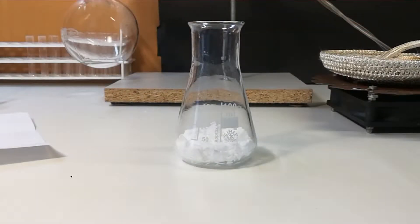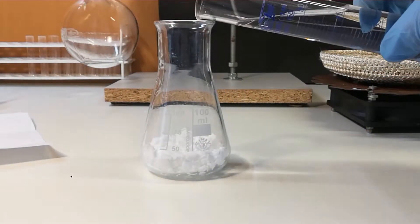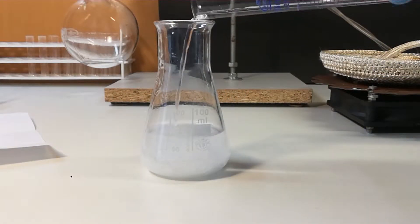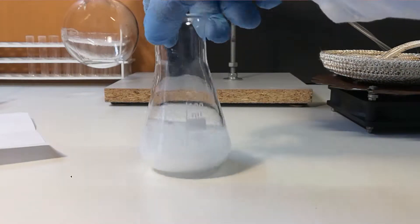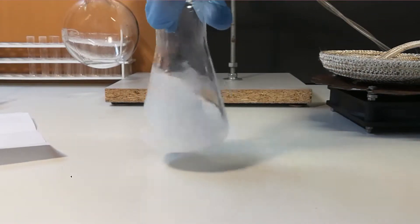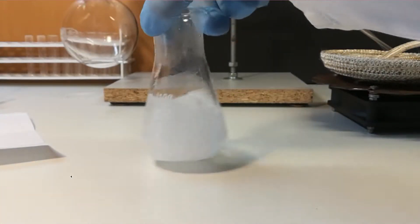Next thing is to make strong basic solution. To do it, weigh out 27.44 grams of potassium hydroxide and then add 50 milliliters of water. Mix thoroughly till mixture is translucent.